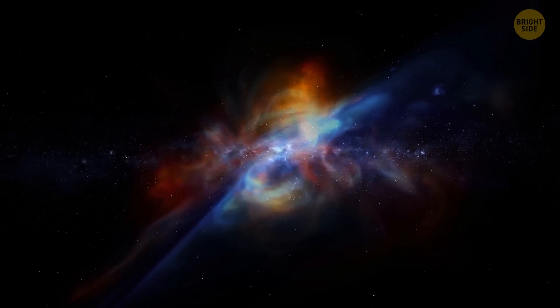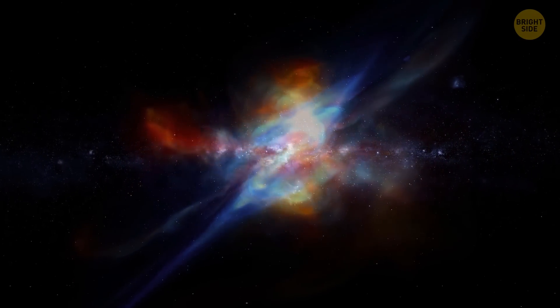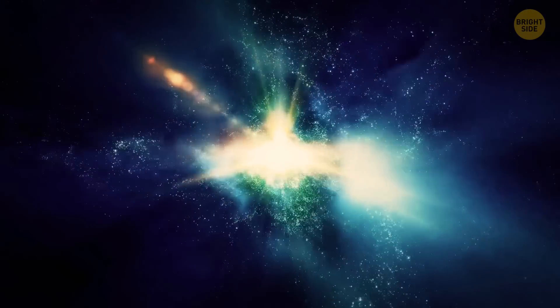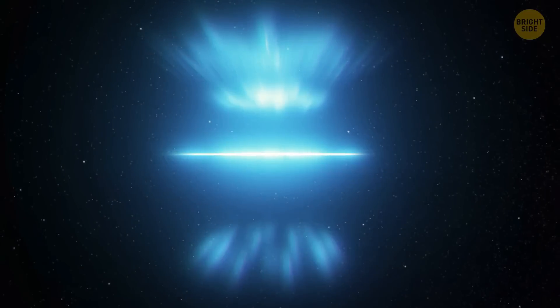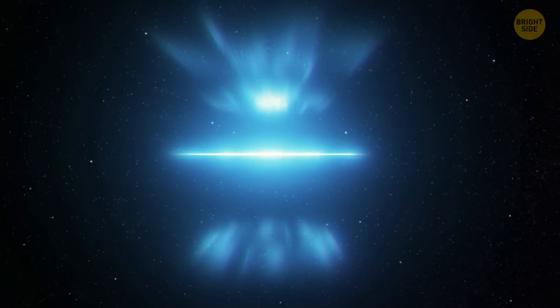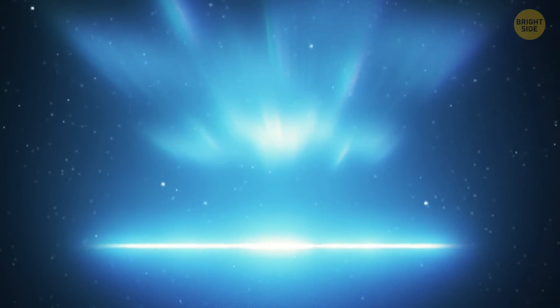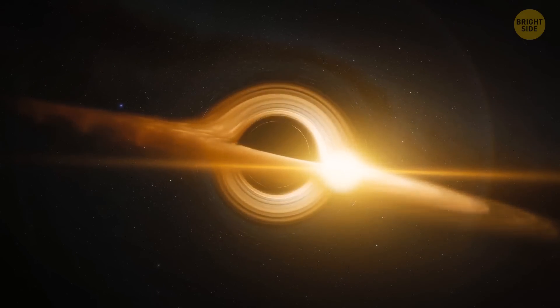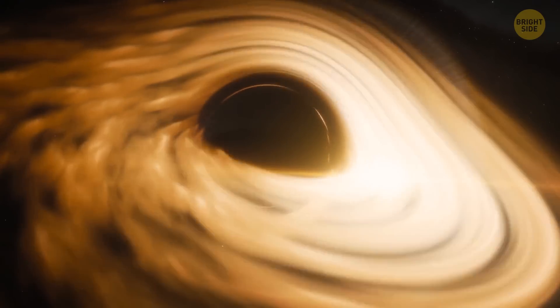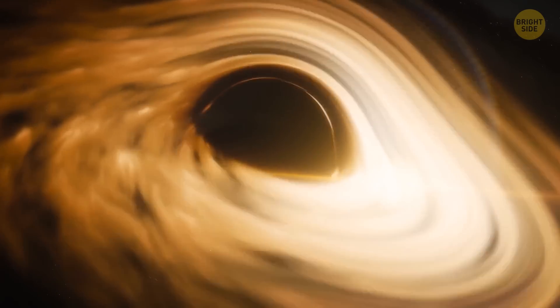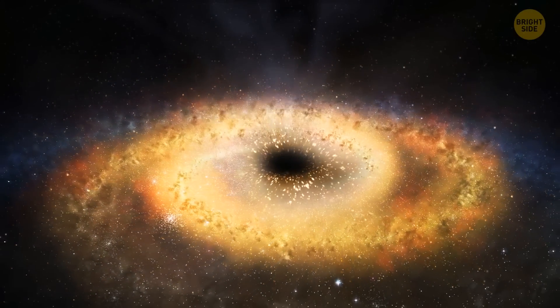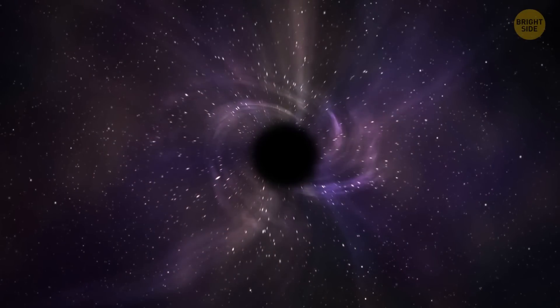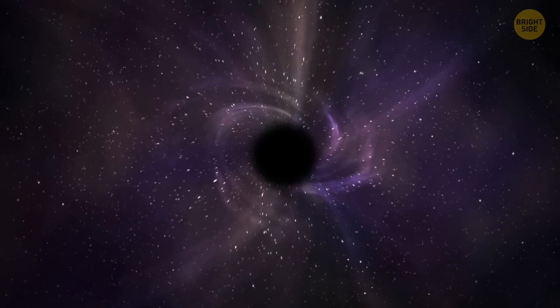Gamma-ray bursts are the most powerful explosions in the universe. And for a long time, no one knew where they had been coming from. Hubble helped us find out that these bursts happen in galaxies, producing a lot of stars and having few heavy elements. This suggests that gamma-ray bursts happen when big stars collapse into black holes. These galaxies have lots of big stars that fall apart quickly, and the stars there don't have much heavy stuff, so they can turn into black holes.